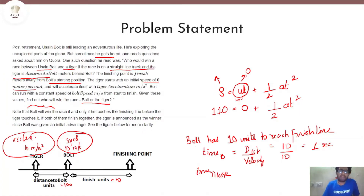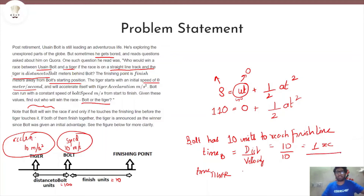Now we need to find the time Bolt will take to reach the finish point and the time the Tiger will take. For Bolt, he has 10 units left to reach the finish line. Time is distance divided by speed. So Bolt's time equals finish_units divided by Bolt_speed, which is 10 divided by 10 — so Bolt clears the finish line in 1 second.